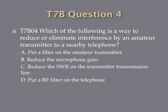Question 4. Which of the following is a way to reduce or eliminate interference by an amateur transmitter to a nearby telephone? A. Put a filter on the amateur transmitter. B. Reduce the microphone gain. C. Reduce the SWR in the transmitter transmission line. Or D. Put an RF filter on the telephone.